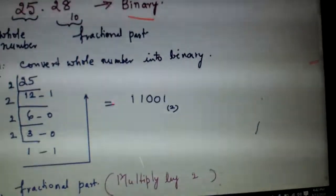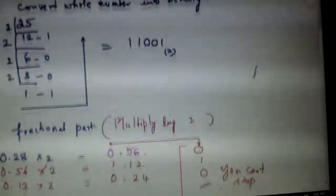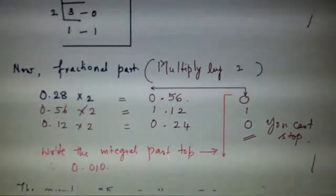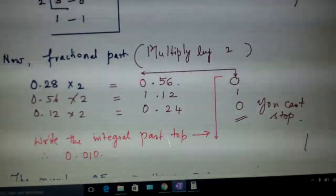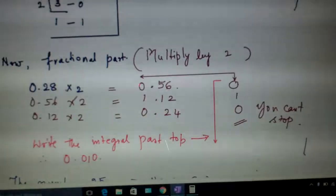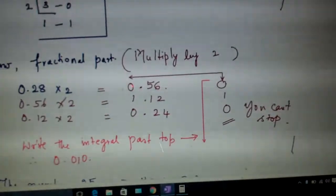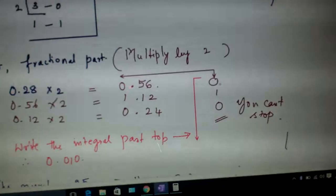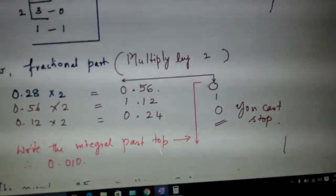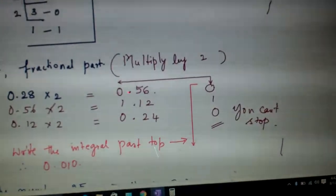Now, how do you convert the fractional part? What is the fractional part given to you? 0.28. So to do this what you do is you multiply it by 2. 0.28 into 2 is 0.56. So this is the fractional part, this is the integral part here.